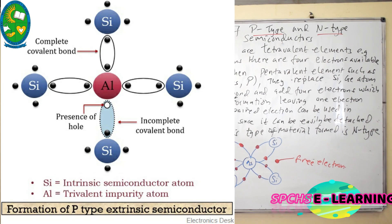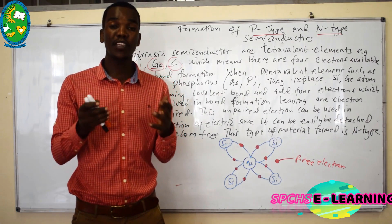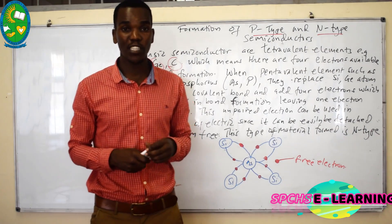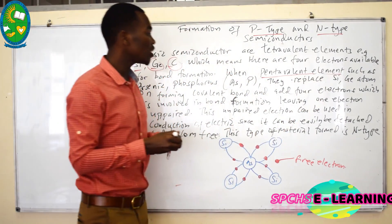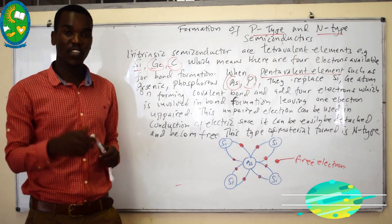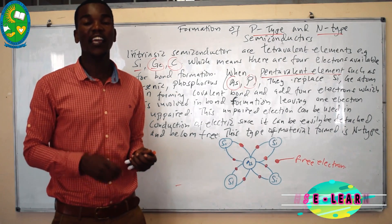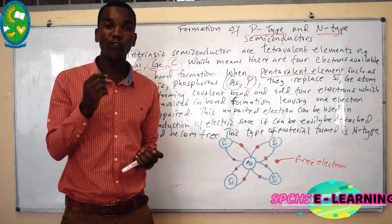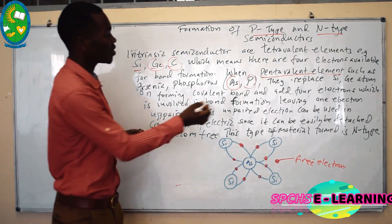When we add an impurity or foreign atom, it replaces an atom in the crystal structure. If we add a pentavalent element — an element found in group 5, for example arsenic or phosphorus — it replaces a silicon or germanium atom and uses four of its outermost electrons to form covalent bonds with neighboring atoms.